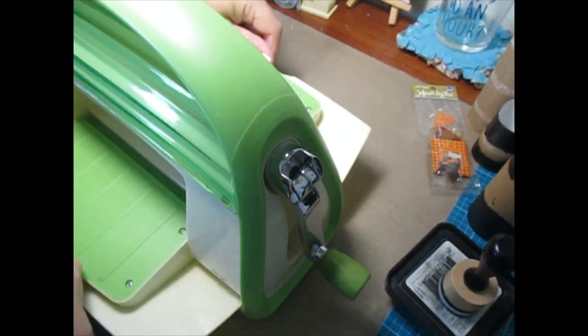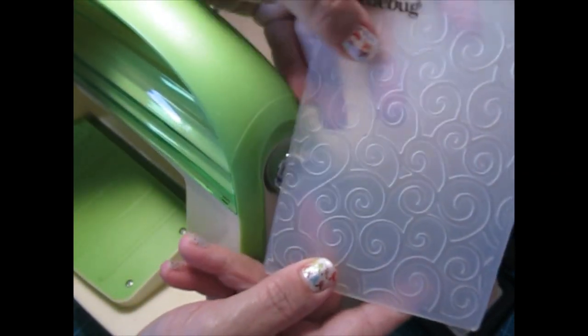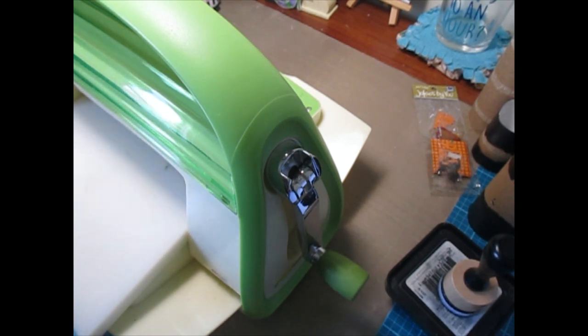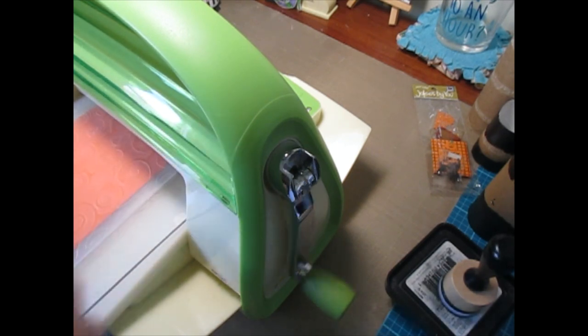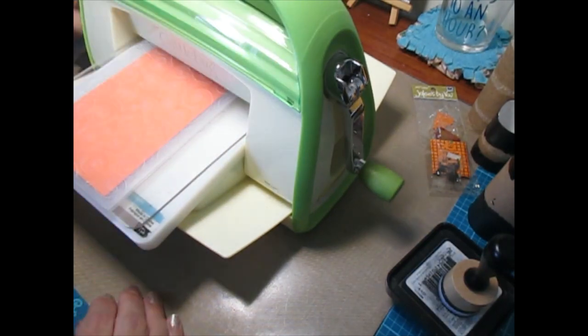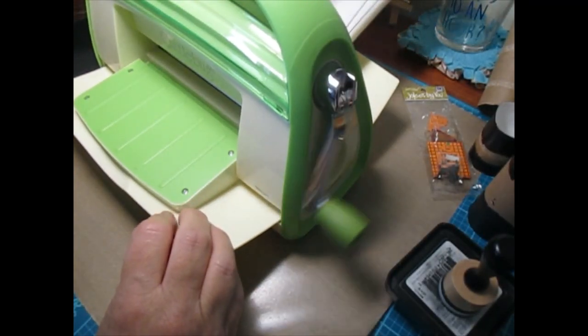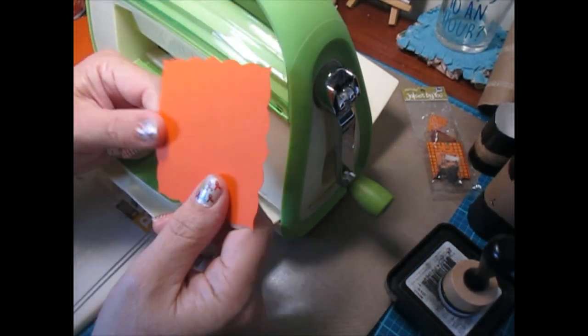I'm going to get my embossing folder out for the orange pieces. The embossing folder I used is this cute flourish swirl pattern. I need my A plate and my B plates. Just pop that in. Let me back this up. And boom. Forgot the B plate on top. Run that through.